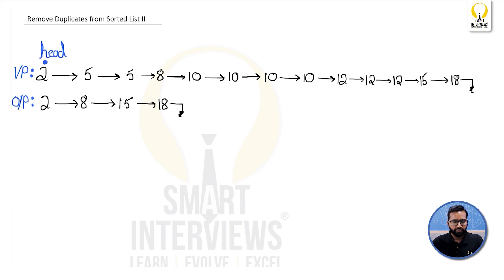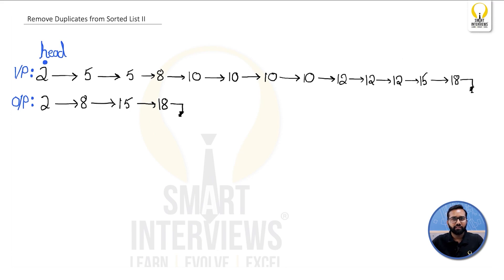To build a logic for this, you can start with a node and iterate to count how many times it is repeated. For example, 2 is repeated only once, but 5 is repeated twice so it should not be kept. In many linked list problems it becomes easier to implement if we start with an empty node, generally called a dummy node.